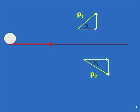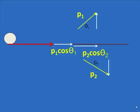This component of P1, the horizontal component, is P1 cos theta1. This component of P2 is P2 cos theta2. The sum of these two components will equal the momentum before and also the momentum after.